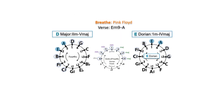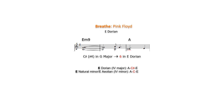In Breathe by Pink Floyd, E minor 9 and A major is a 2-5 in D major, and a 1-4 in E Dorian, the 2nd mode of D major. The relative major of E natural minor is G major, with F sharp in the key signature. The characteristic 6th note in E Dorian is C sharp, which is also the 3rd in A major. The sharp next to C indicates that we are in E Dorian and not E natural minor, where A is a minor chord.